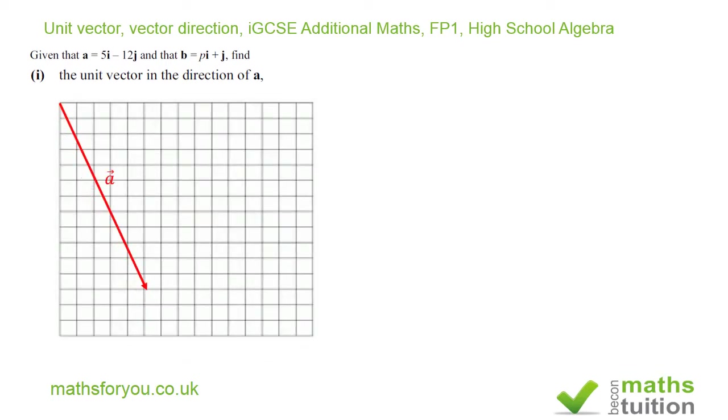Now the product of the magnitude of vector a and the unit vector will give you vector a. So the magnitude of vector a times a hat, which is a unit vector, is equal to vector a.